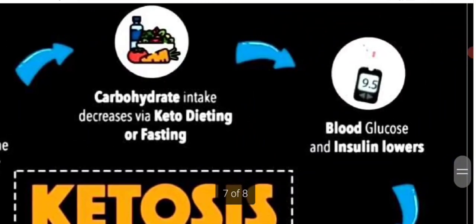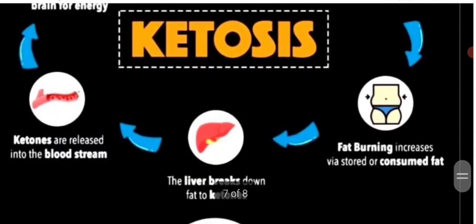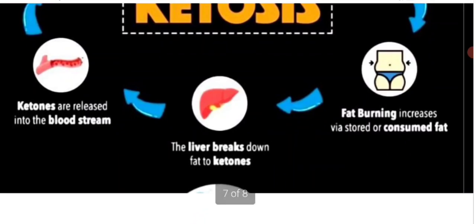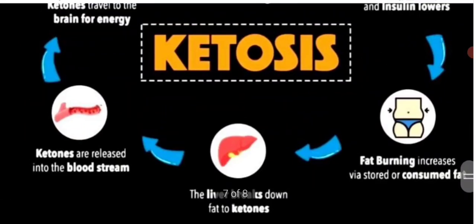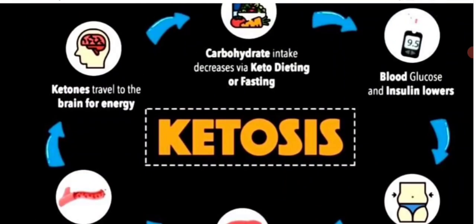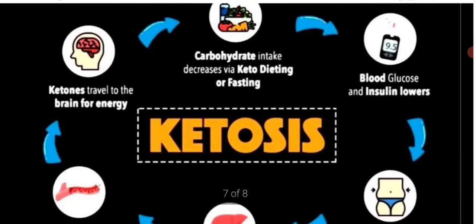So, during prolonged starvation or diabetes mellitus, the blood glucose level is reduced. The body then starts to burn stored fat. The liver breaks down fat into ketones, which are released into the bloodstream. These ketone bodies travel to the brain to be used for energy.